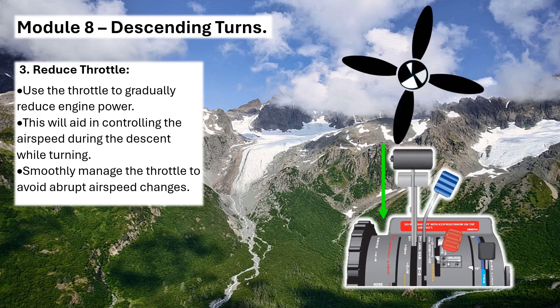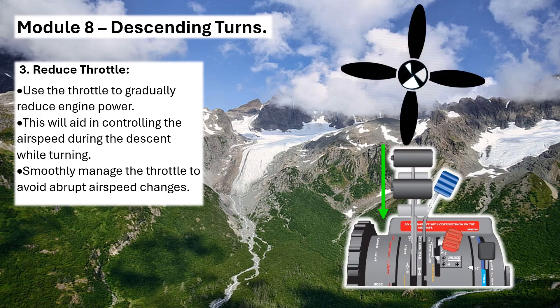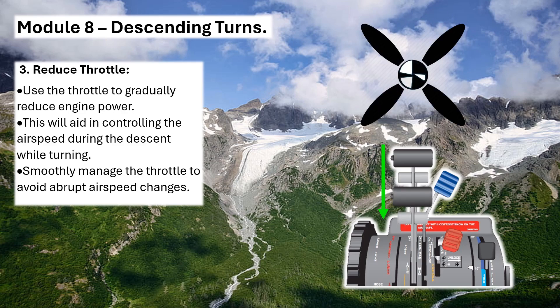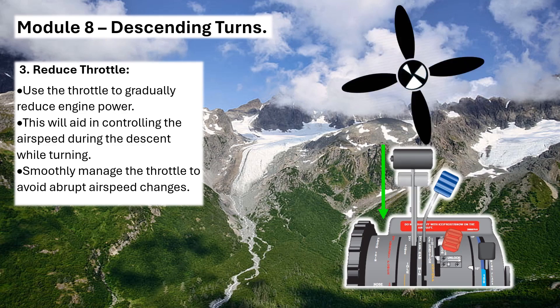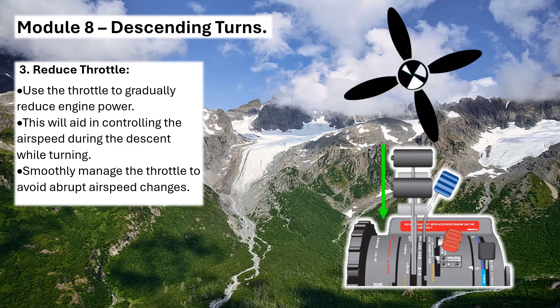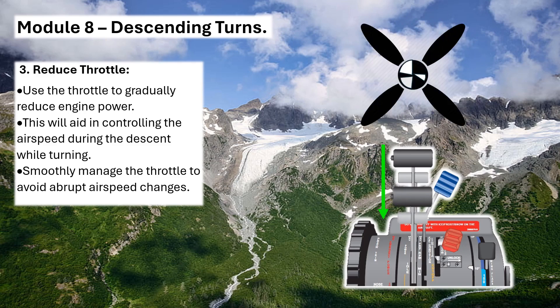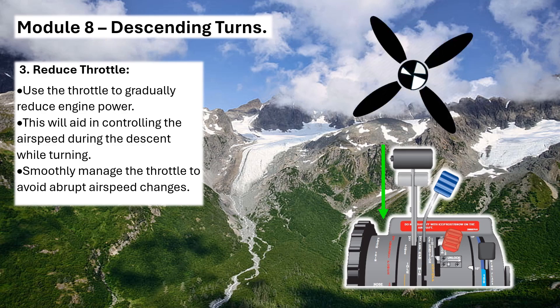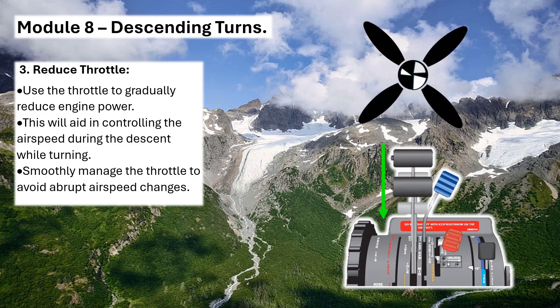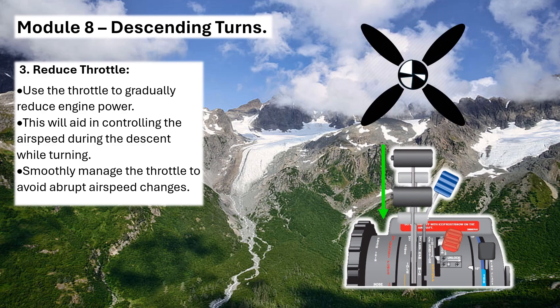3. Reduce throttle – use the throttle to gradually reduce engine power. This will aid in controlling the airspeed during the descent while turning. Smoothly manage the throttle to avoid abrupt airspeed changes.